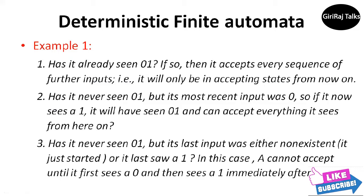The second condition is: has it never seen 0,1 but its most recent input was 0? So if it now sees a 1, it will have seen 0,1 and can accept everything it sees from here on. The third condition is: has it never seen 0,1 but its last input was either non-existent or it last saw a 1? In this case, A cannot accept until it first sees a 0 and then sees a 1 immediately after.